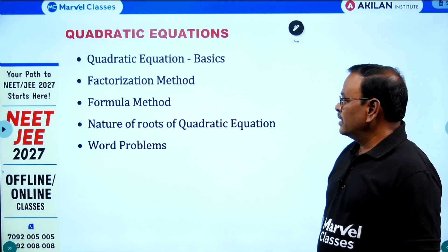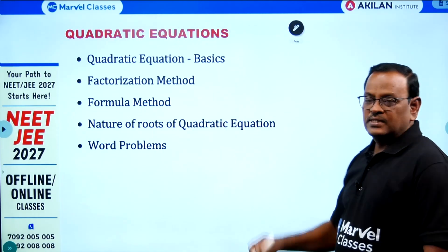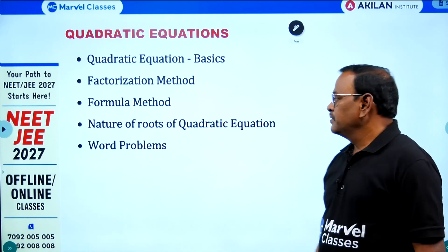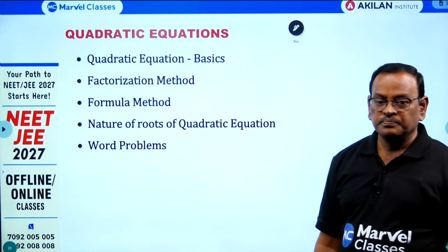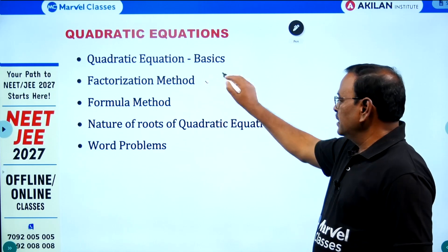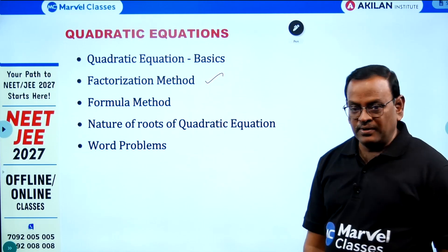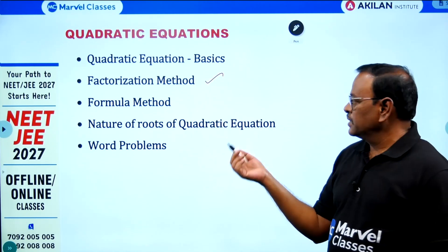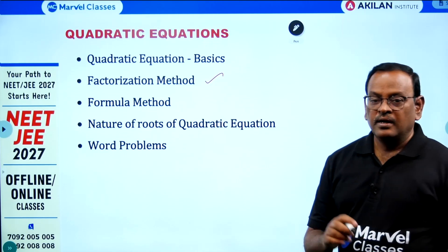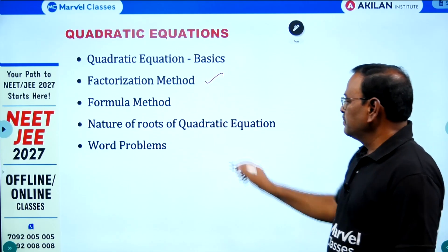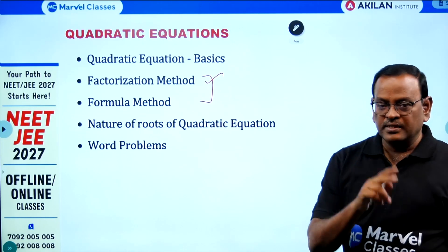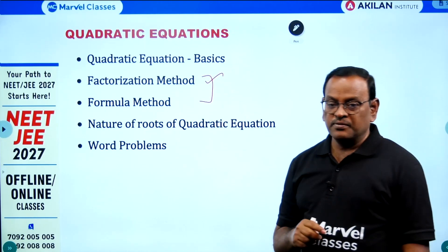Next: Quadratic Equations. The basics have very few concepts. If a zero is given, find the value of K using the factorization method. If a method is specified, apply that method; otherwise it depends on the question. Similarly, the formula method is also applicable. You have to practice two different types of quadratic equations — one with numerical coefficients, for example 4x² + 7x + 9, and another with algebraic coefficients like Ax² + (A² + B²)x + AB.